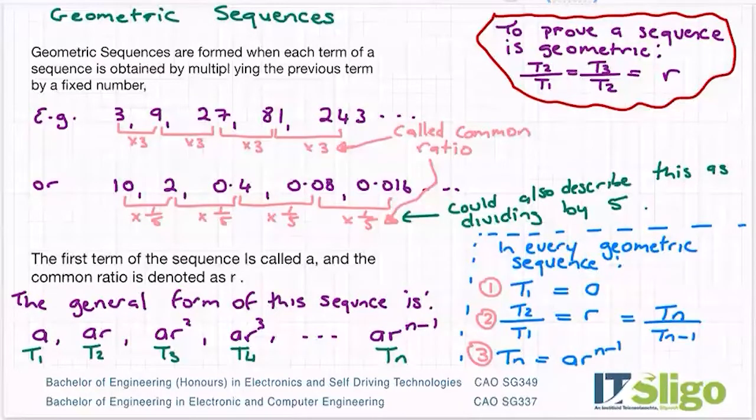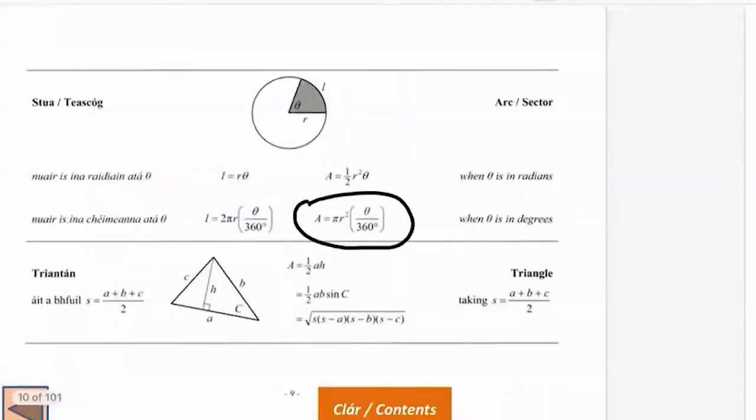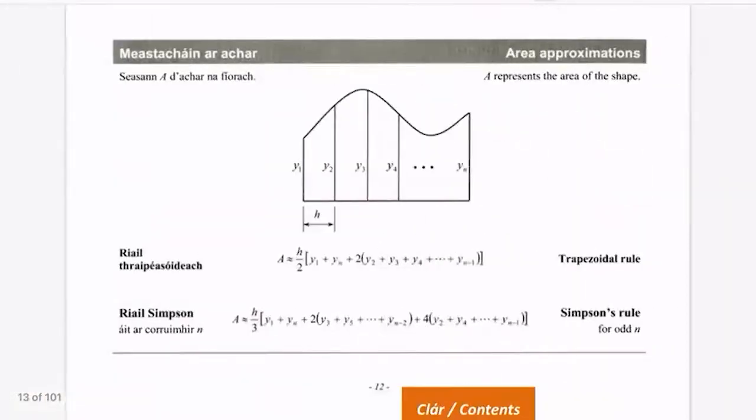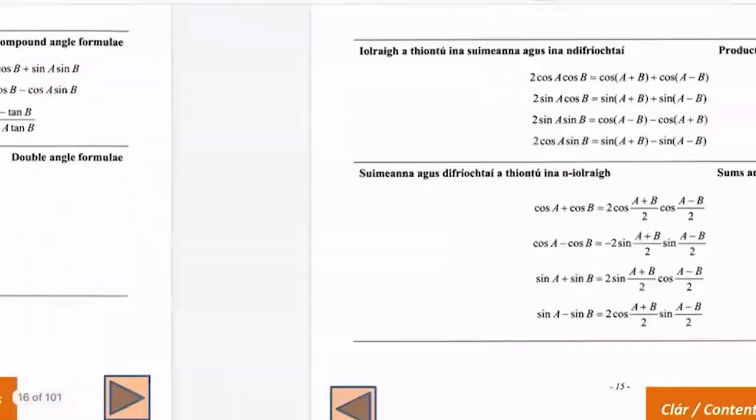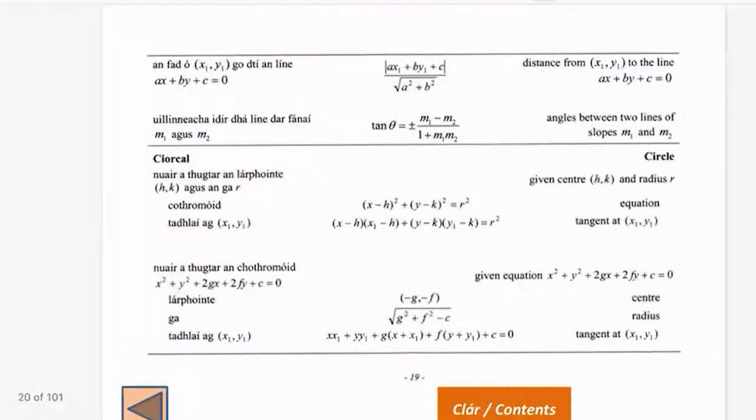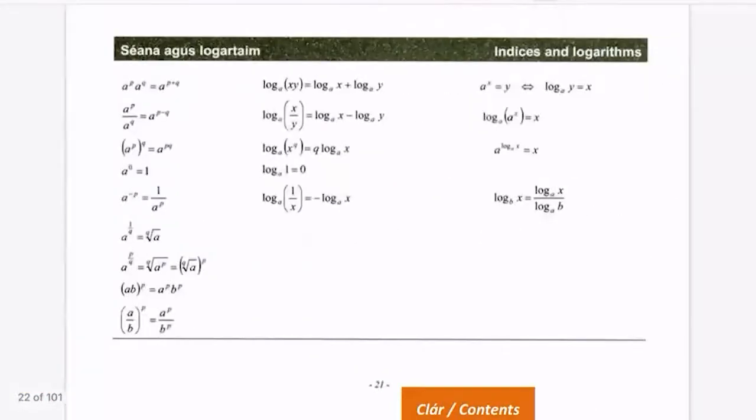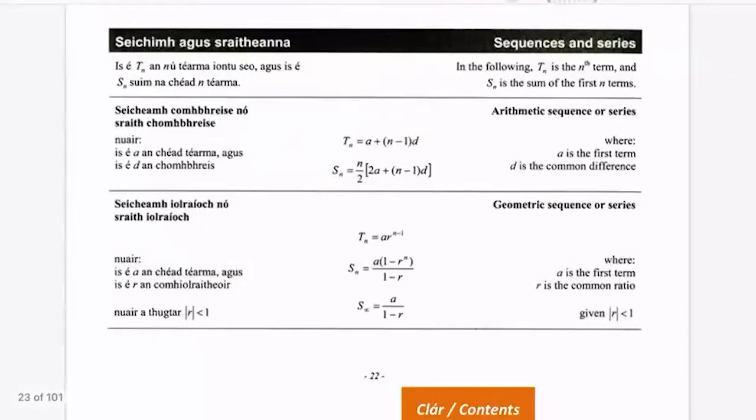So a little look at geometric sequences and what they mean. We've already done arithmetic and quadratic and cubic. Geometric are a different type altogether. If we go to the log tables, to sequences and series, we can see that the top half was dedicated to arithmetic sequences, the bottom half is geometric sequences or series.